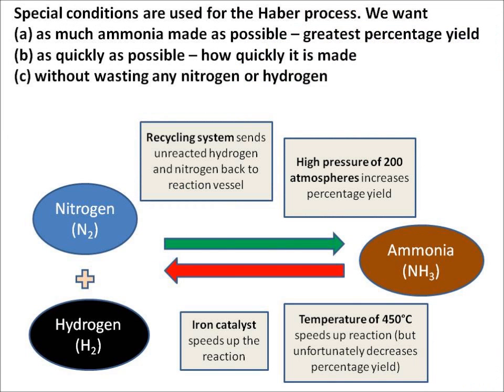We want to select conditions for the Haber process so that we make as much ammonia as possible - that's called the greatest percentage yield. This means we want the reaction going completely to the right: lots of the green arrow and as little of the red arrow as possible. We also want the reaction to happen as quickly as possible, and we want to make sure we don't waste any nitrogen or hydrogen.